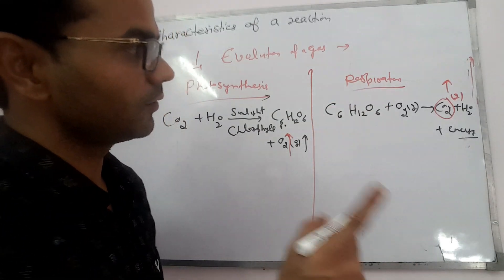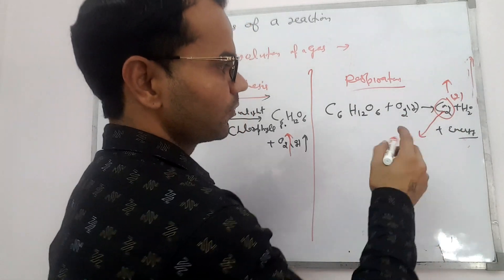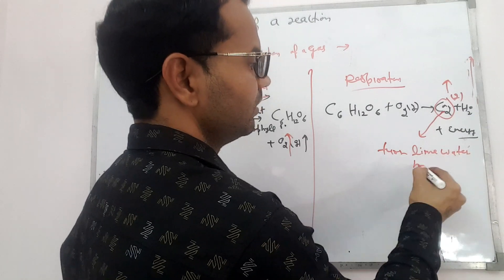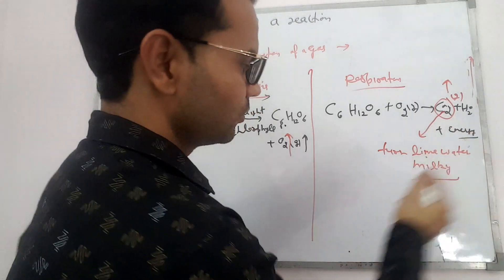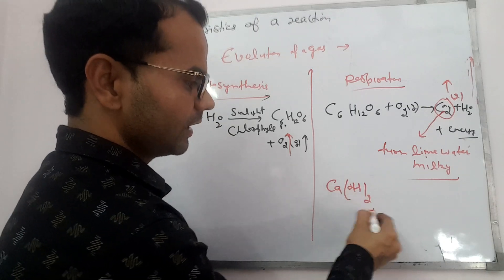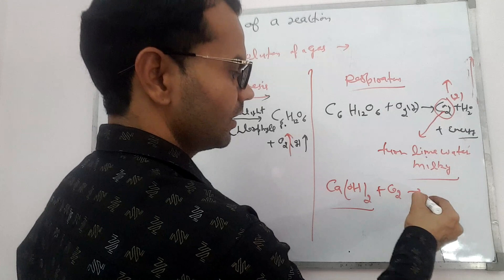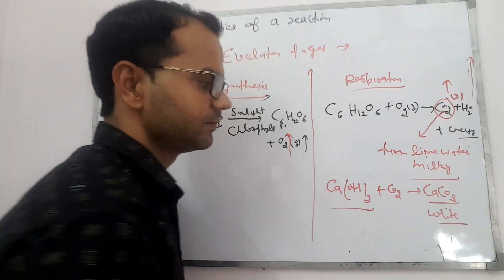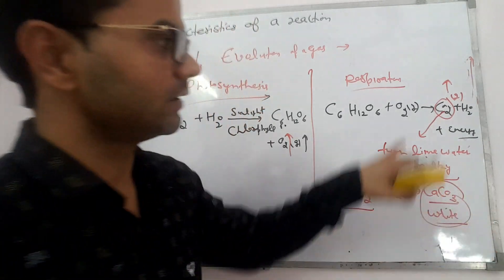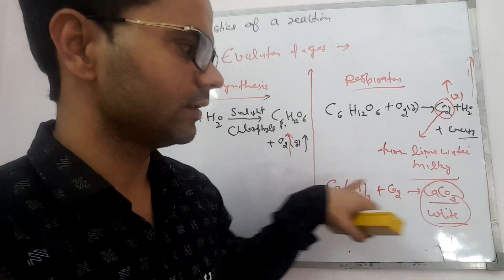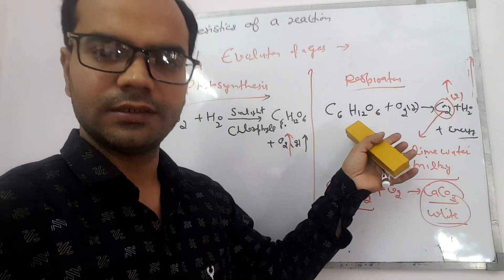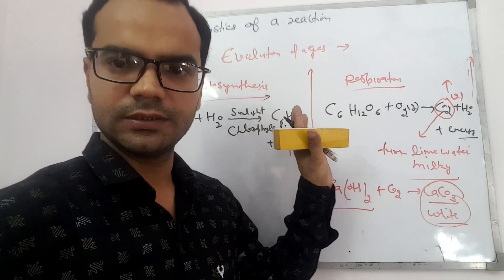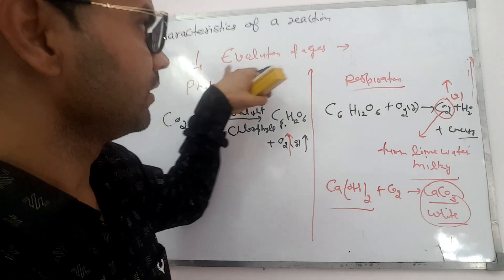CO2 has a unique property: when CO2 gas is passed through a solution of calcium hydroxide (lime water), it turns it milky white, forming calcium carbonate. This is a unique property of CO2 — it turns lime water milky. We will understand this further in the next lecture on types of reactions.